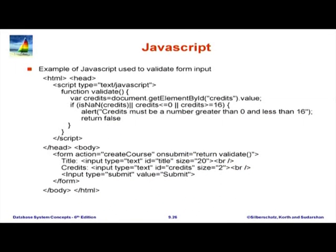Here is a piece of code — the form has an action 'onsubmit return validate'. When you submit, the JavaScript function written inside the script tag gets invoked and can do various validations. Here it checks if the credit is between 0 and 16 — if outside this range, it reports an error and asks you to correct it. This is an example of input validation using JavaScript.